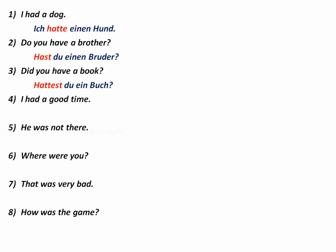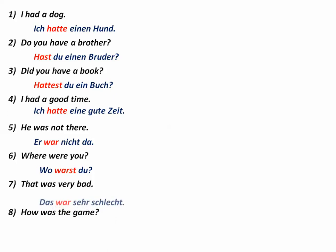I had a good time — ich hatte eine gute Zeit. He was not there — er war nicht da, or dort. Where were you? Wo warst du? If you wanted to say it politely: Wo waren Sie? That was very bad — Das war sehr schlecht. How was the game? Wie war das Spiel? So we're just using the simple past of Haben and Sein in some sample sentences here.